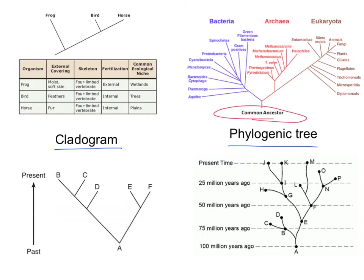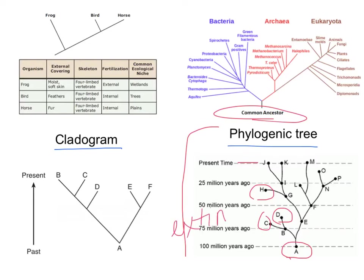These diagrams are based on relationships. You can see who is most closely related to the others and see where the common ancestry is. If we look at this phylogenetic tree in the right-hand corner, you can see the time scale. The common ancestor to everybody would be down at A. Things that have not made it up to present times — like H, C, and D — are extinct.